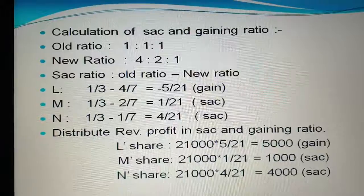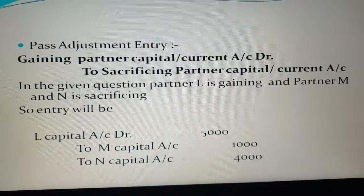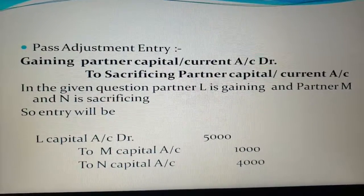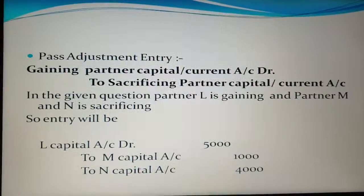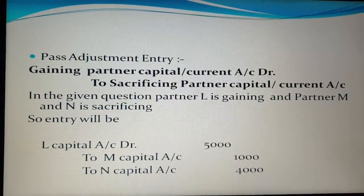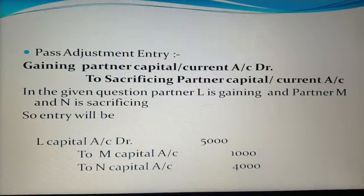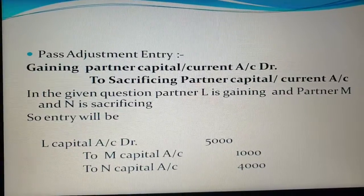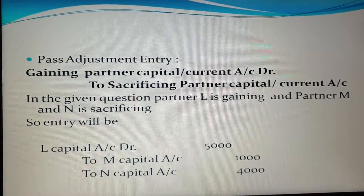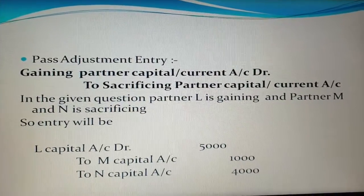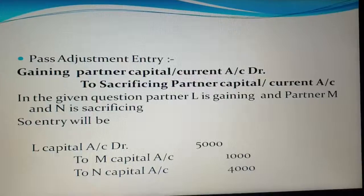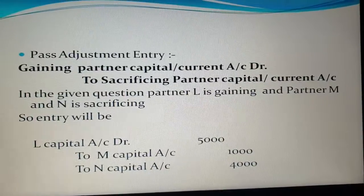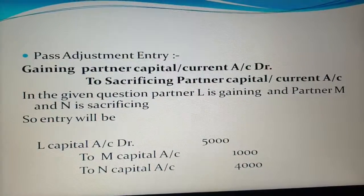You have to pass a single journal entry: the gaining partner's capital account is debited and the sacrificing partners' capital accounts are credited. Since L is gaining and M and N are sacrificing, the entry is: L's Capital Account Dr. 5,000 — To M's Capital Account 1,000 — To N's Capital Account 4,000. In this example we are only covering the calculation of the revaluation account.